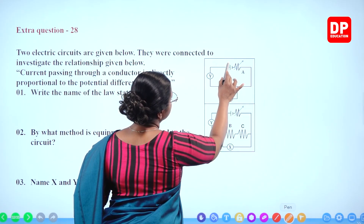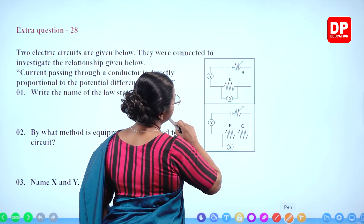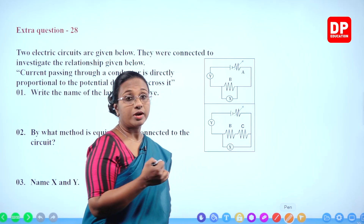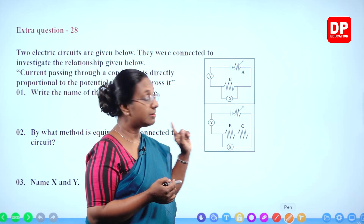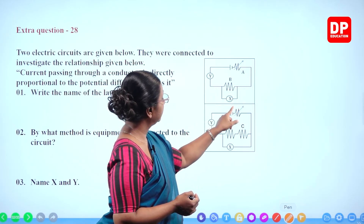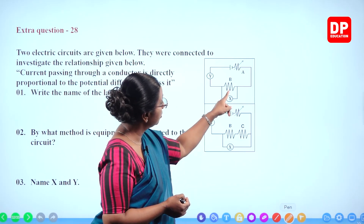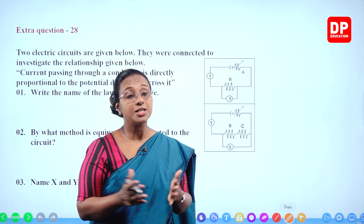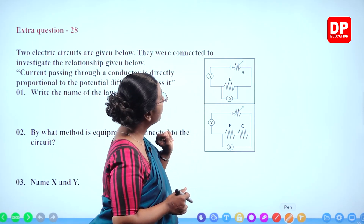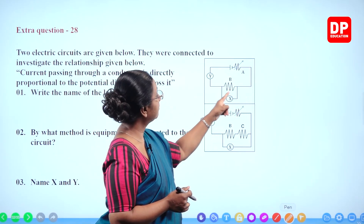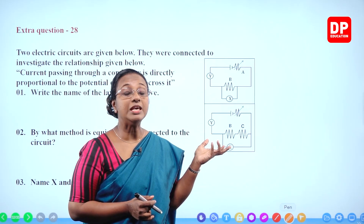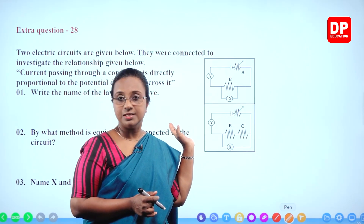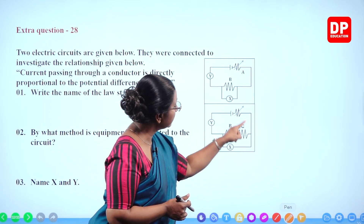In the first circuit, there is a dry cell battery, a variable resistor A, and resistor B. A component is connected in parallel to resistor B — that is X, which must be the voltmeter. Then Y is connected in series with B, so all current through B flows through Y as well — Y must be the ammeter. This is similar to the activity to verify Ohm's law.